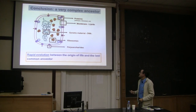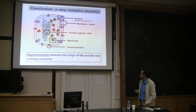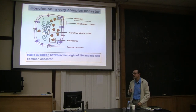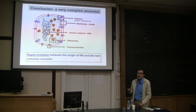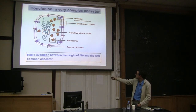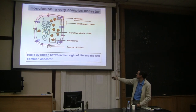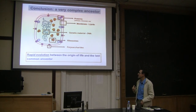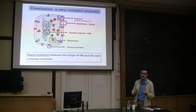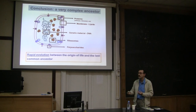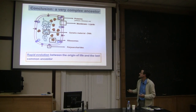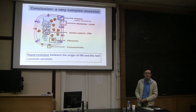From all of this, we can say that the last common ancestor already looked like a relatively modern cell: it had a relatively large genome with hundreds of genes, a membrane composed of phospholipids, ribosomes, different proteins, and so on. This means there was a relatively rapid evolution between the origin of life from simple organic molecules and a last common ancestor that was already a complex cell. Thank you for your attention.